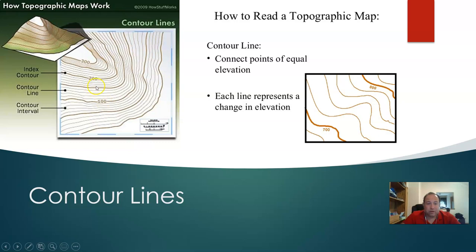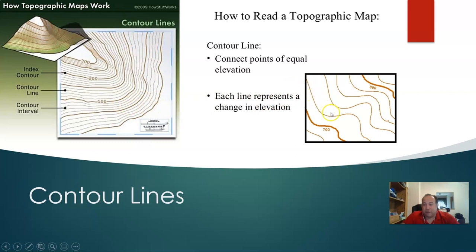So this would be 100, 150, 200, 250, 300 feet of elevation, meaning 0 feet of elevation at the bottom. Contour lines are lines that connect equal points of elevation. When we look at this map, if we follow a contour line, that's where it's always going to be at that same elevation. Looking at the map on the right, we see 700 and 800 as our index contours.